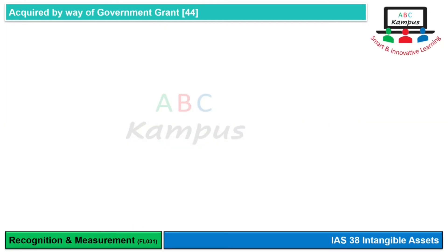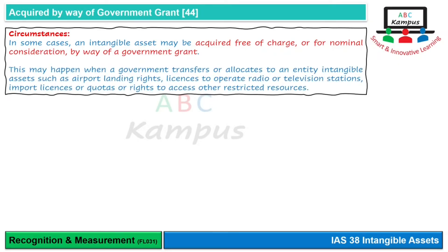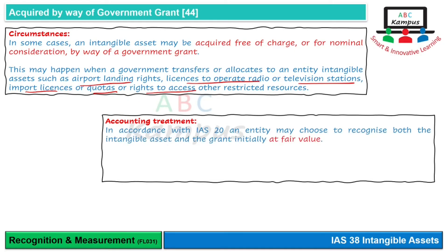A third method of acquiring an intangible asset is by government grant — free of charge or for nominal consideration. This typically occurs when a government transfers rights such as airport landing rights, licenses to operate radio or TV stations, import licenses, quotas, or rights to access restricted resources. The relevant standard is IAS 20. Under IAS 20, the intangible asset is debited and deferred grant is credited at fair value.